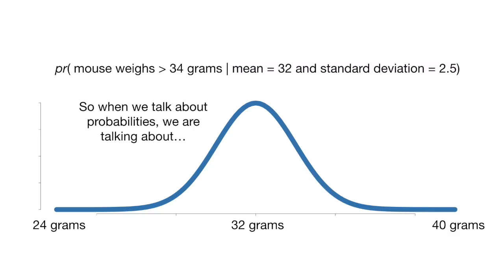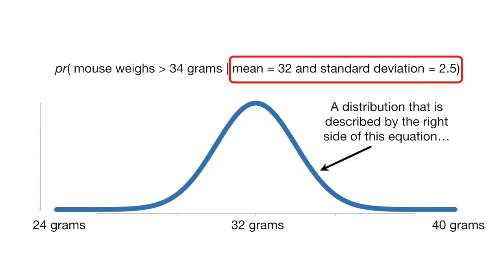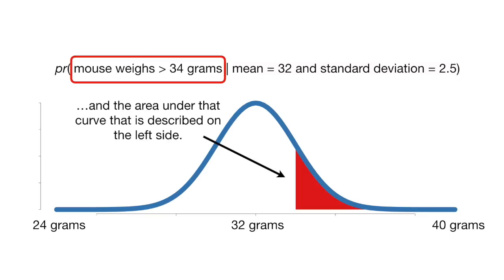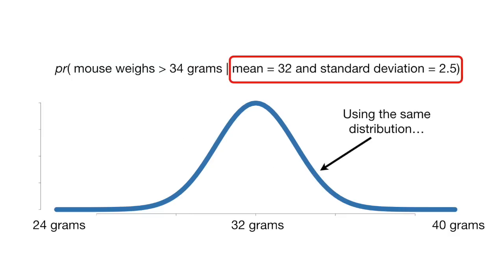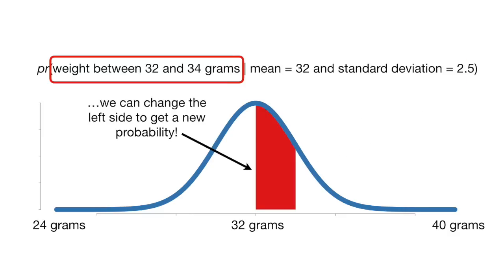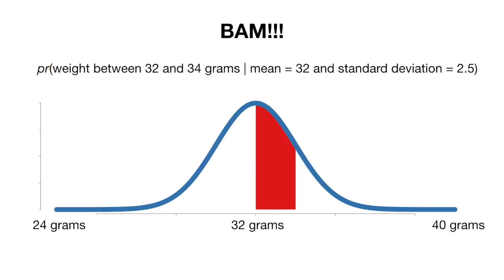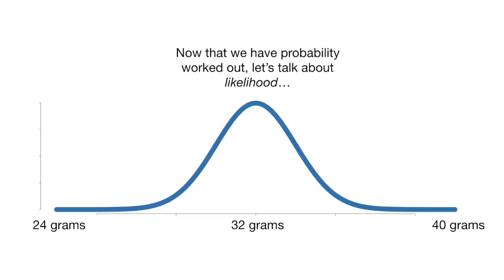So when we talk about probabilities, we are talking about a distribution that's described by the right side of this equation and the area under the curve that is described on the left side. Using this same distribution, we can change the left side to get a new probability. Now that we have probability worked out, let's talk about likelihood.